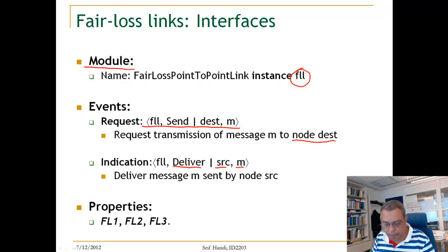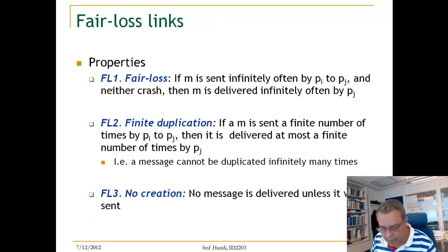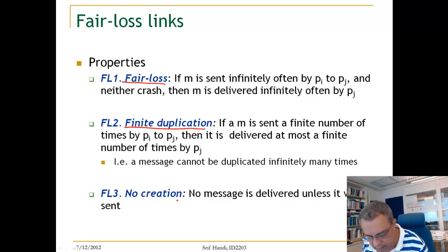Now we look to the properties of a Fair Loss Link. A Fair Loss Link has three properties: the Fair Loss property, the Finite Duplication property, and the No Creation property. The Fair Loss property is saying that the message will be delivered with a non-zero probability. And you can describe this in a different way. One way of capturing it is to say the following, that if M is sent infinitely often from PI to PJ, and PI and PJ neither crash, then M is delivered infinitely often by PJ.